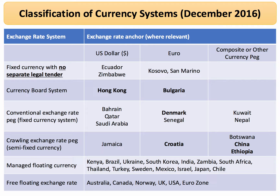Some countries don't have their own separate legal tender — for example, San Marino uses the euro, and Zimbabwe can use a range of currencies with the dollar probably the most valuable. Some countries have a fixed exchange rate in a currency board system, backing their currency with a foreign currency. Hong Kong is pegged to the US dollar, Bulgaria to the euro. Saudi Arabia has a conventional fixed exchange rate to the US dollar, and Denmark's krone is fixed to the euro, as is Senegal's.